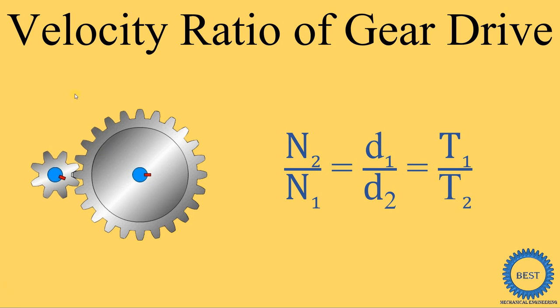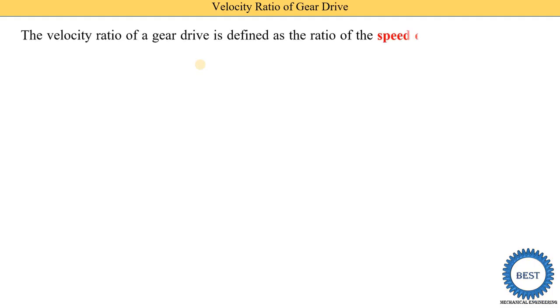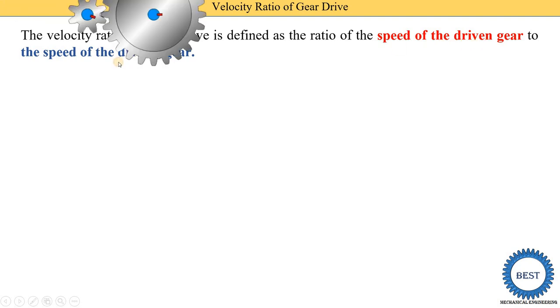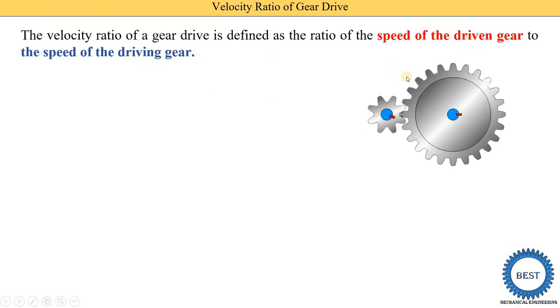In this video, we understand the velocity ratio of gear drive. First we study the definitions and then derive the equation. The velocity ratio of gear drive is defined as the ratio of the speed of the driven gear to the speed of the driving gear.